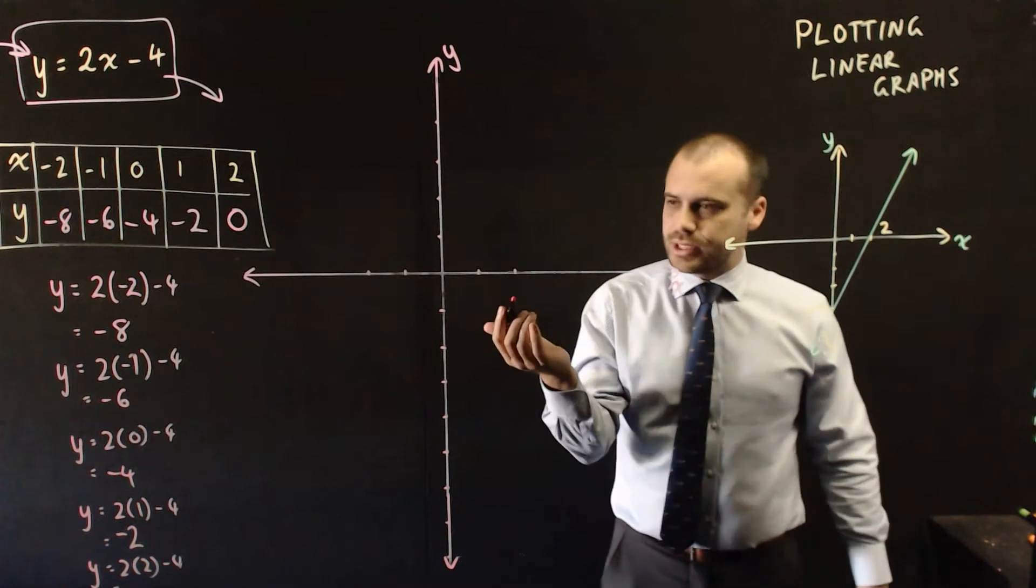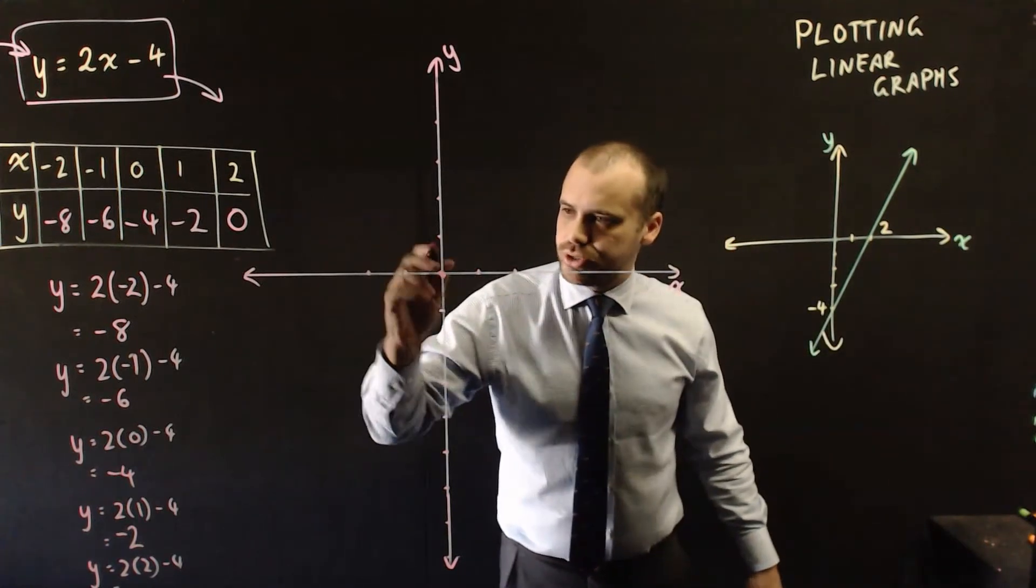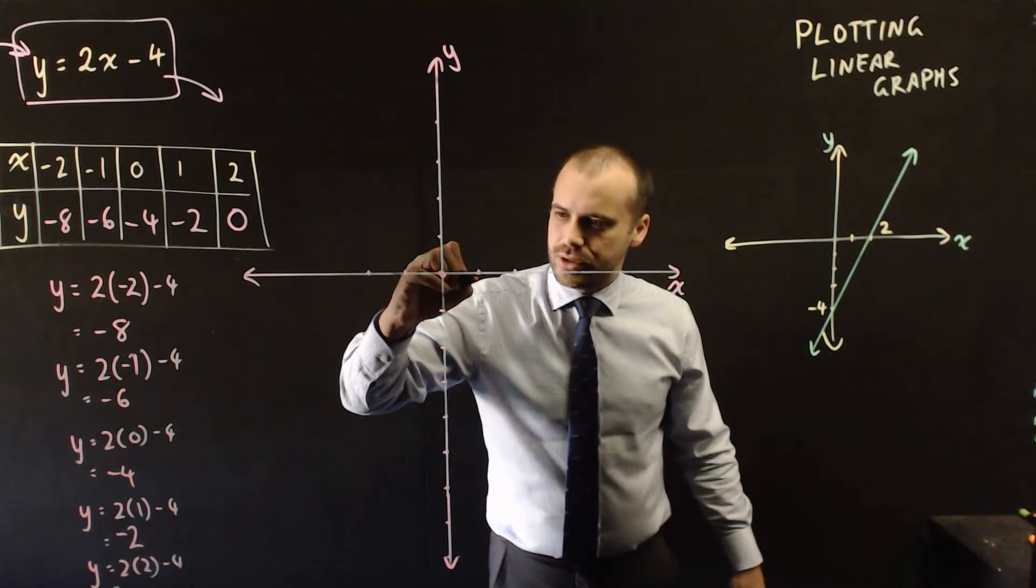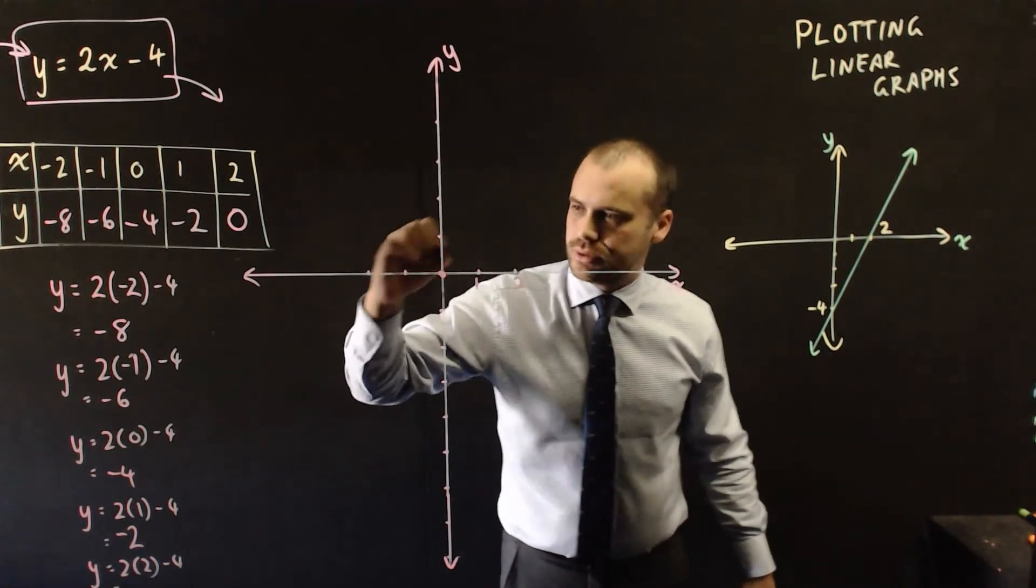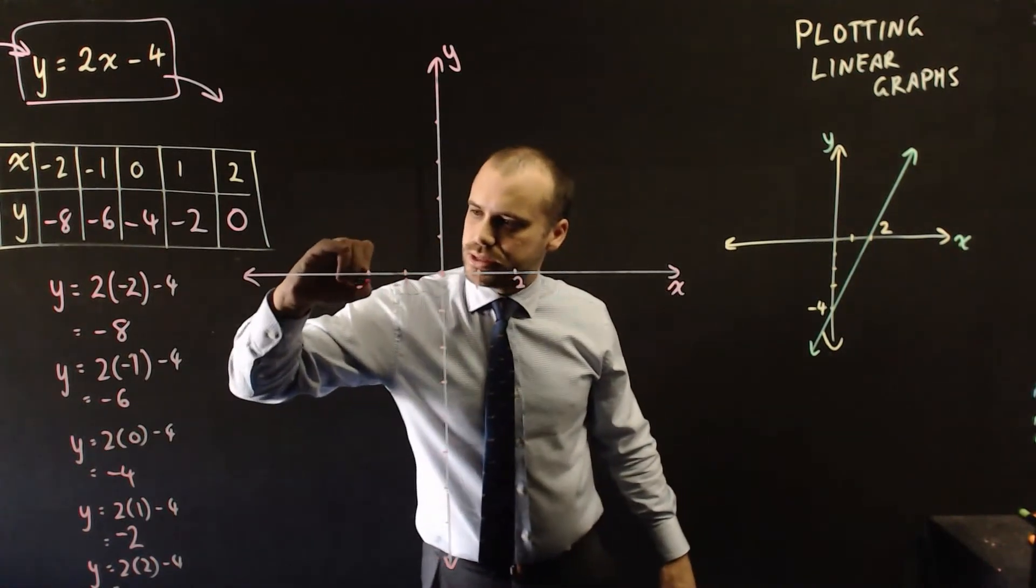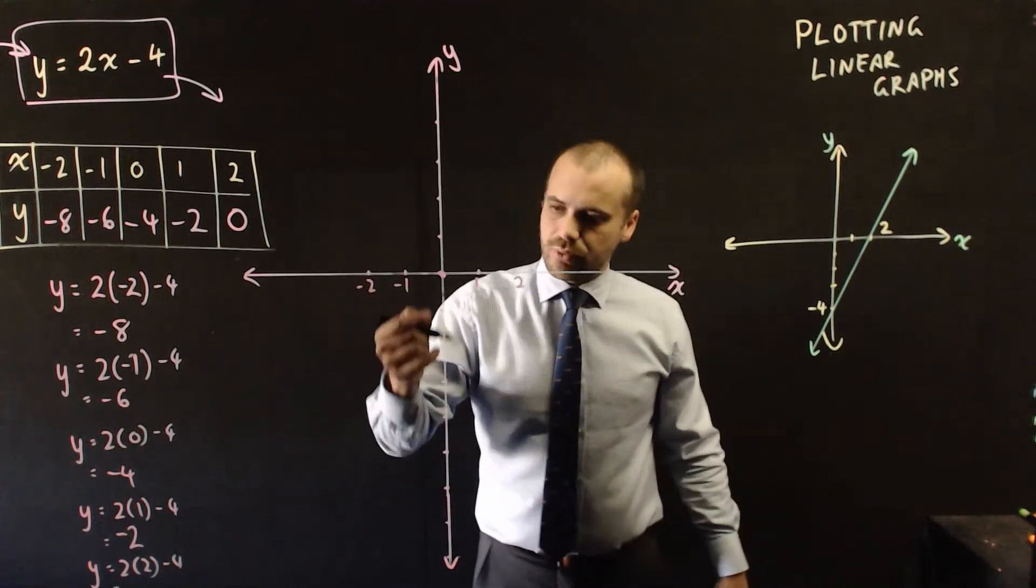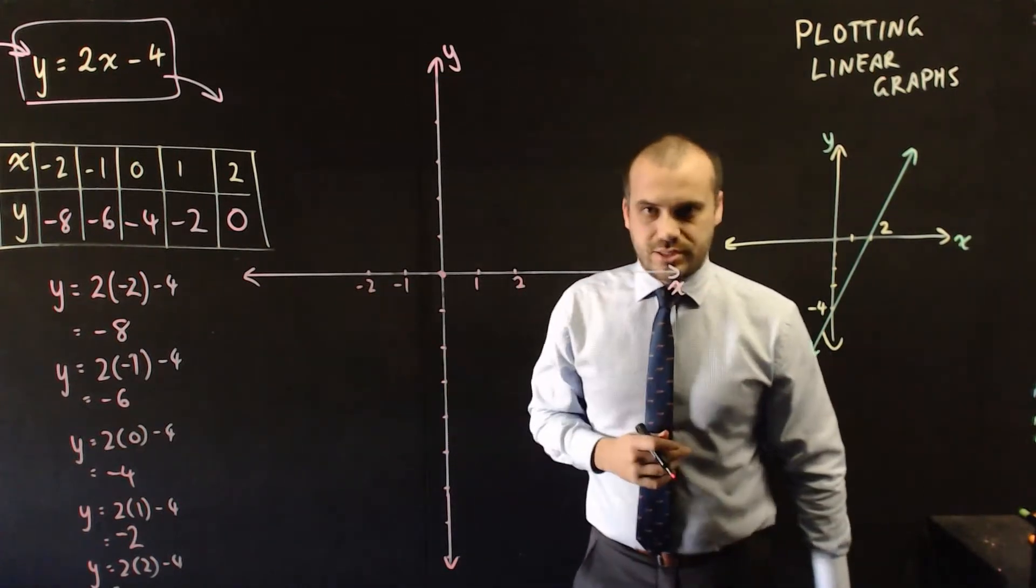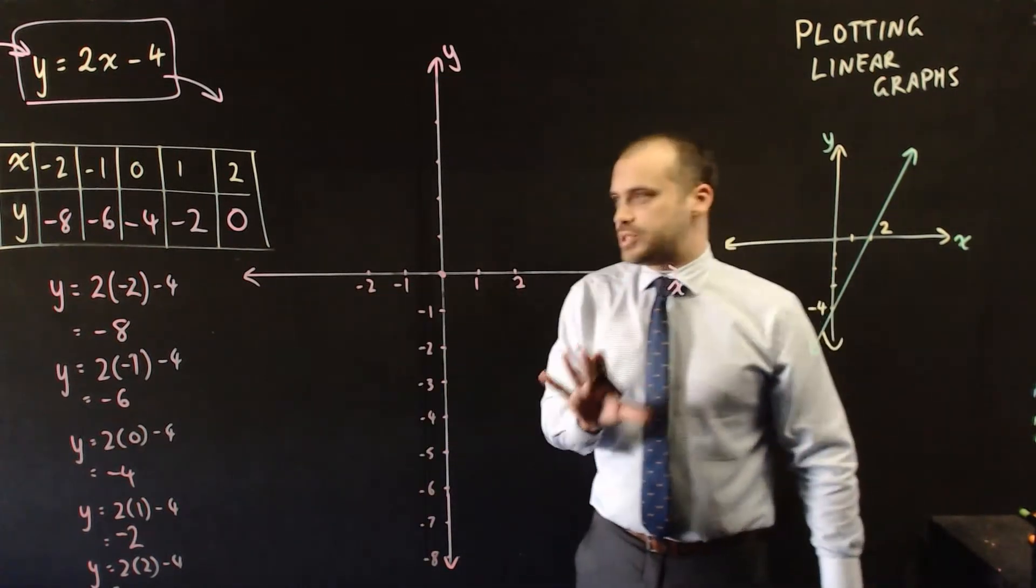So now I'm going to label these up. This is the origin, 0. You don't have to write the number 0. This is 1, 2, negative 1, negative 2, and then down to negative 8. And now we just get started plotting.